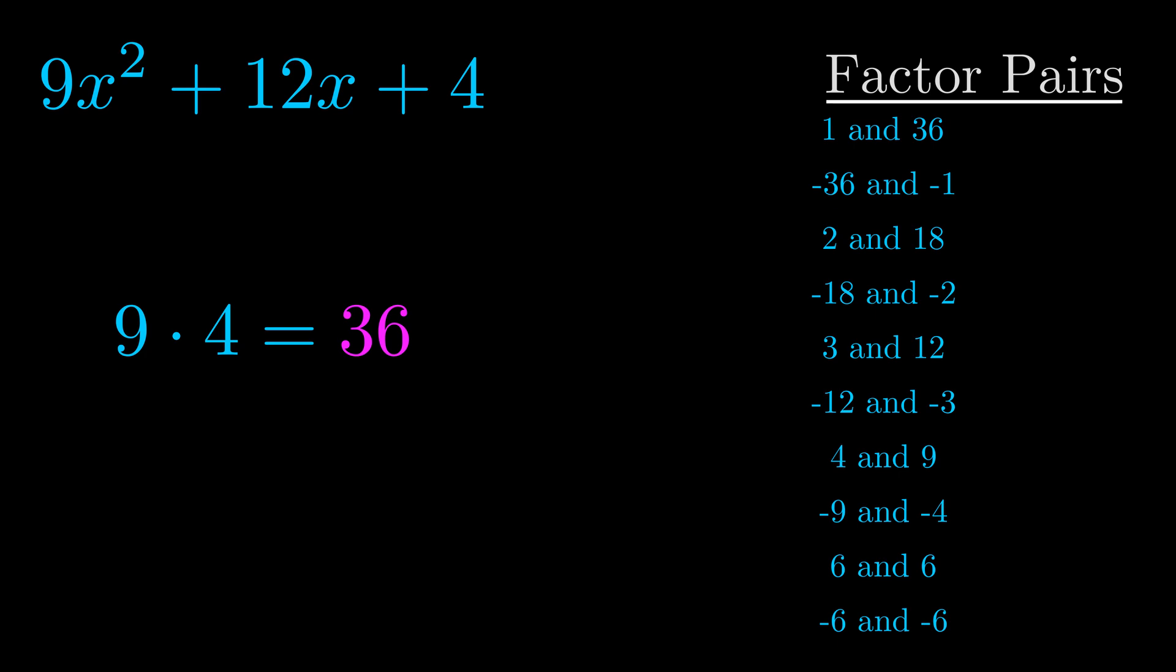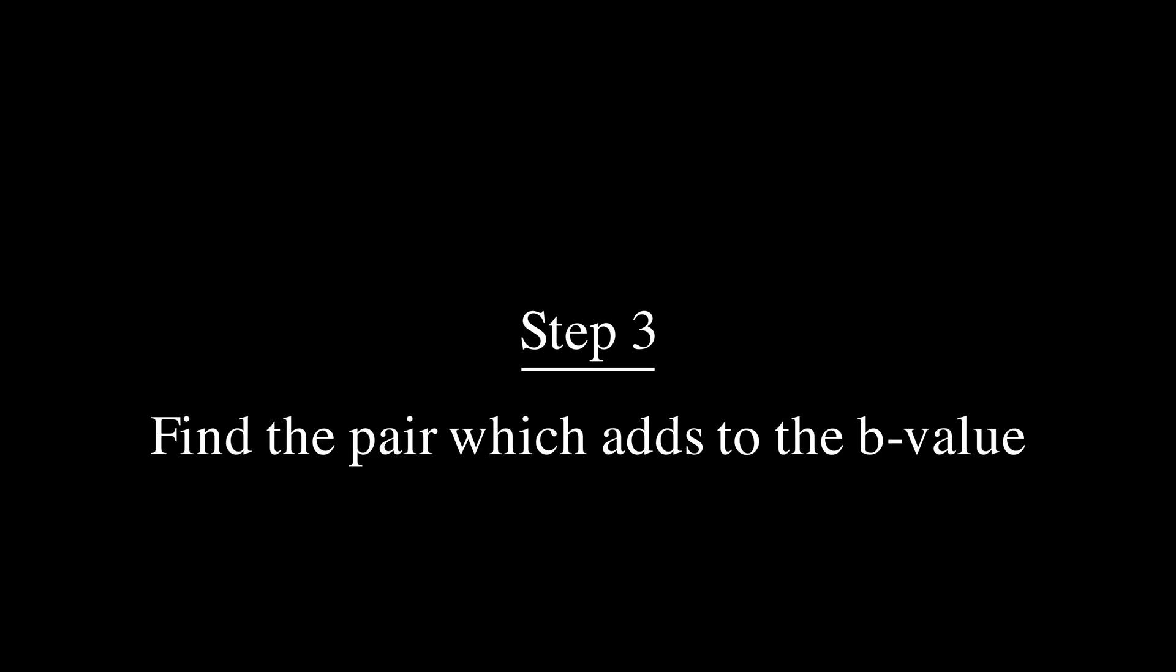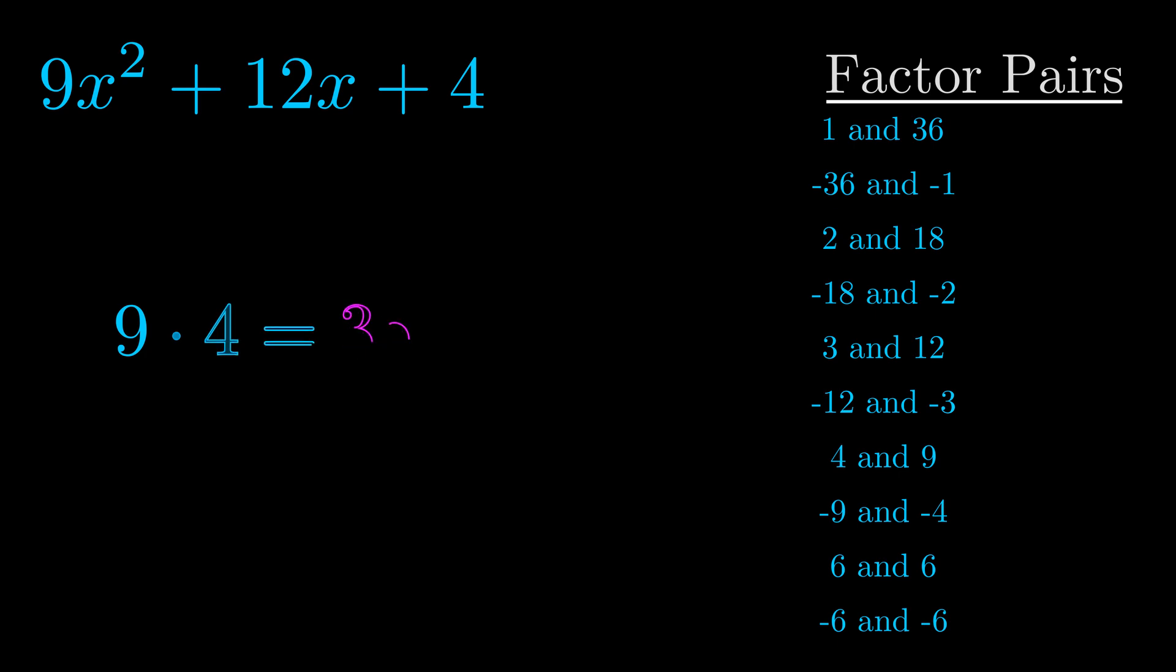Now once you have these factor pairs the goal is to find which of these pairs adds to the b value. The b value is the coefficient on the x term. That's the middle term, the one that we haven't done anything with yet. And really this is the only factor pair that we need.